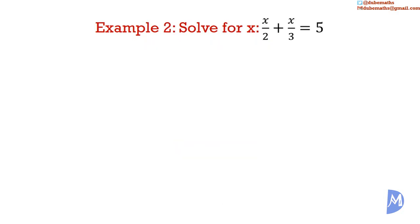Example 2. Solve for x. x over 2 added to x over 3 is equal to 5. All the x's are on one side. x over 2 is being added to x over 3. LCM of 2 and 3 is 6.